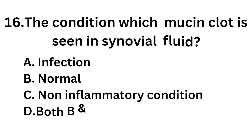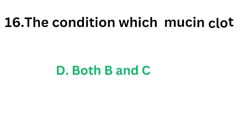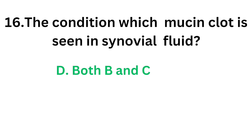Question number 16: In which condition is mucin clot seen in synovial fluid? Option A: Infection. Option B: Normal. Option C: Non-inflammatory condition. Option D: Both B and C. The mucin clot test is based on the polymerization of hyaluronate, where synovial fluid is added drop by drop to 20 ml of 5% acetic acid. Normal synovial fluid will form a firm clot with clear surrounding fluid — this is called the mucin clot. A good clot indicates normal, and a poor clot indicates inflammatory condition. The correct answer is Option D: both B and C — normal and non-inflammatory conditions.